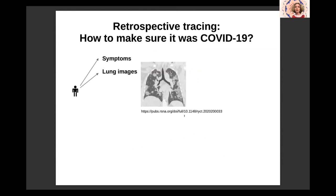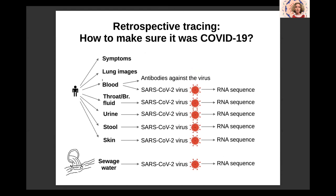So for retrospective tracing, how can we make sure it was COVID-19? It can be based on the symptoms, also based on lung images — for example, you can find ground glass opacities in both lungs, which is a sign of COVID-19. You can also examine samples: from the blood, detecting antibodies against the virus, and you can also find presence of the virus in the blood, which is very rare. But in other samples such as throat or bronchoalveolar fluid, urine, stool, or skin — if you detect the virus and can extract the RNA, then you can sequence it and see whether it corresponds to SARS-CoV-2.